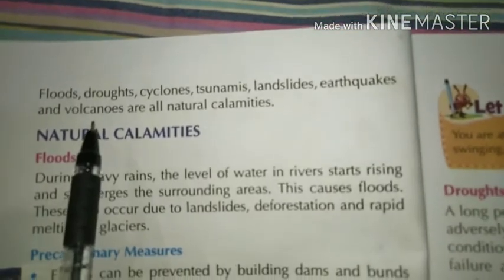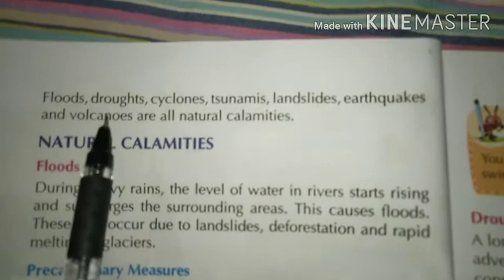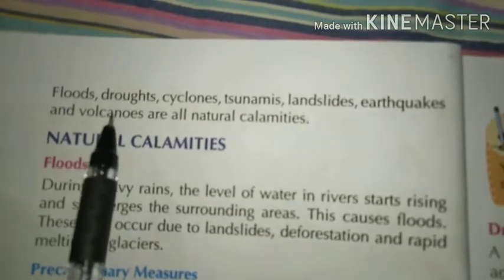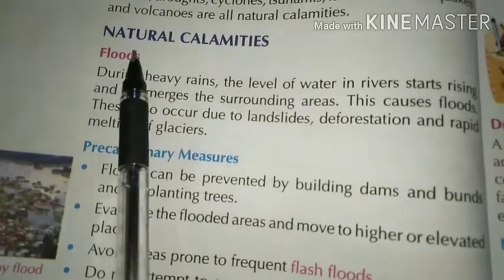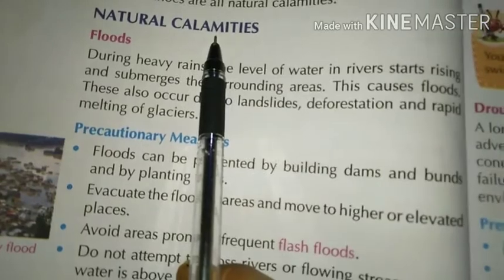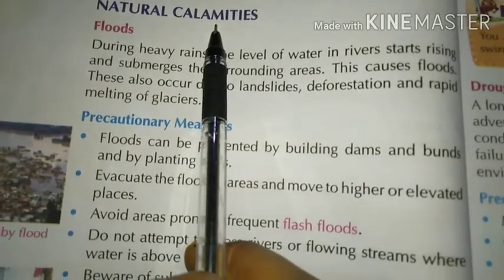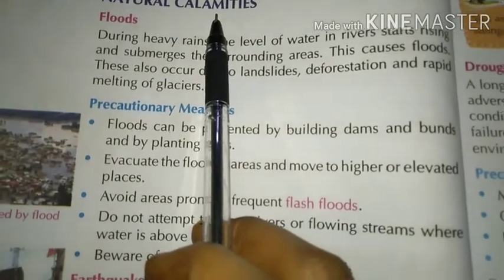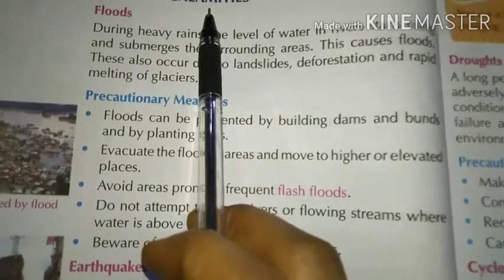About these natural calamities we will read one by one so you can learn about them. Natural calamities means natural events like flood, drought, and earthquake that cause great damage or loss of life.